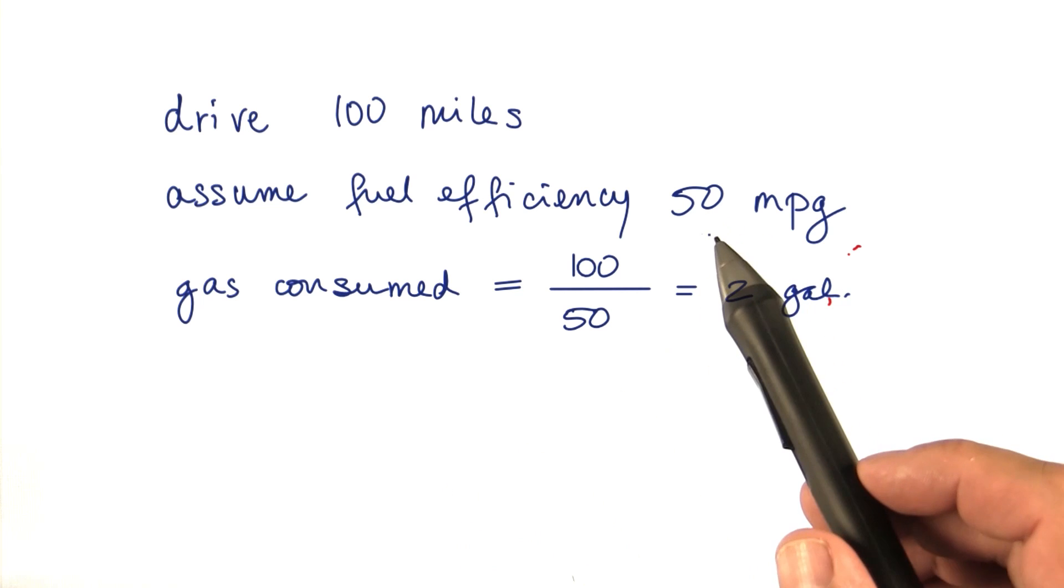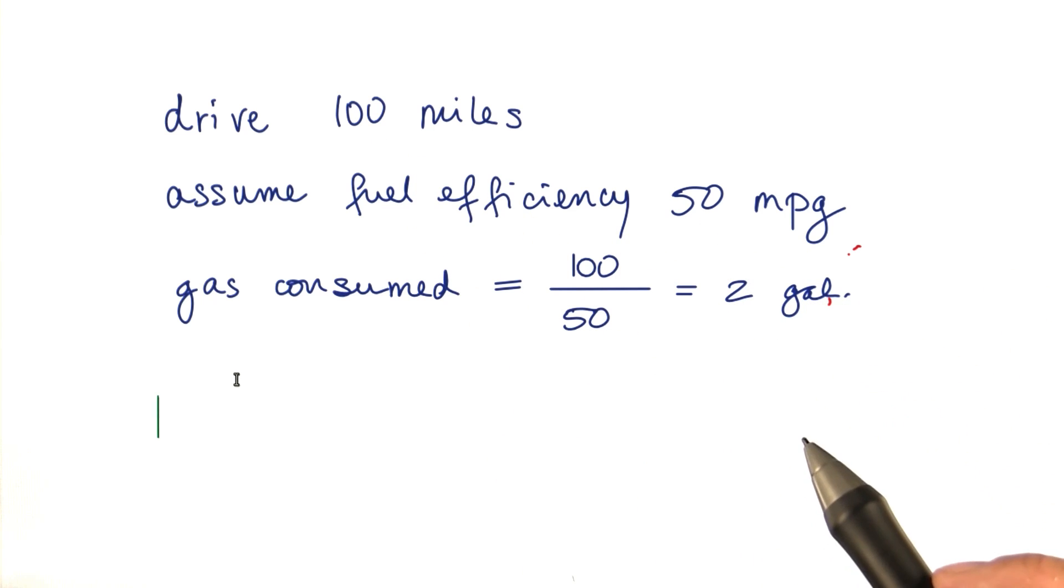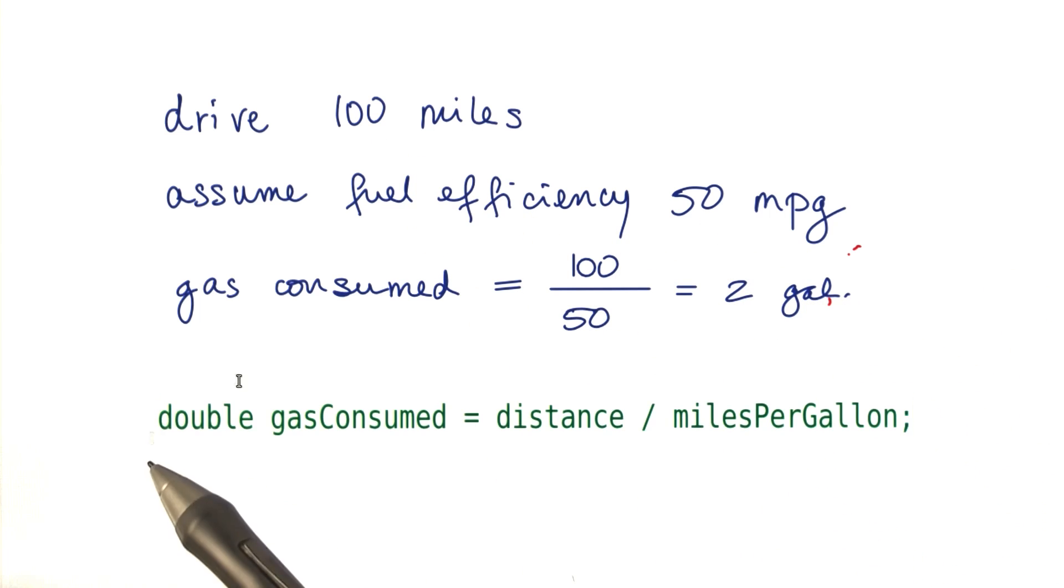Right? 50 miles for one gallon, 50 miles for another gallon, for a total of the 100 miles. That's something that we can easily program in Java, and here's the formula. Let's put that into our code.